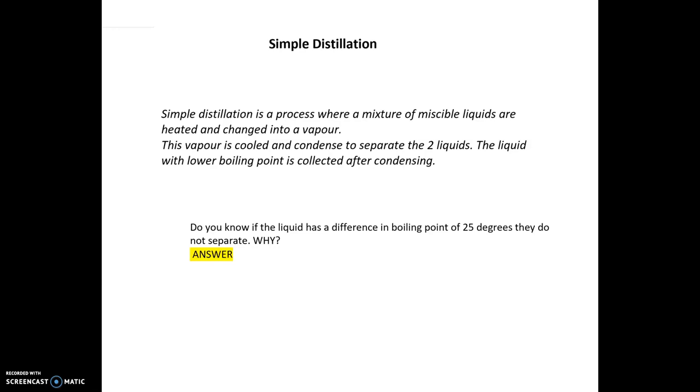What's the difference between these two distillation procedures? Simple distillation is where you have two miscible liquids that are heated and changed into a vapor. The vapor that has the lower boiling point is condensed first and collected, and this is used for simple liquids that don't have very high temperatures.